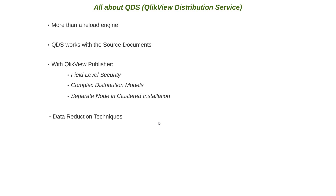There are two types of authorizations. The first is dynamic data reduction, which determines if the user is allowed to view the data when the user tries to access it. The second is static data reduction, which is performed by QlikView Publisher and determines if the user is allowed to view the data when the data is prepared for the user. Both static and dynamic data reduction can be implemented individually, or combined to deliver robust data-level authorization.